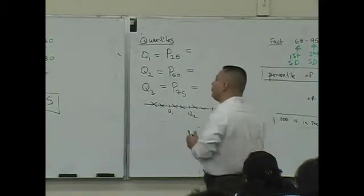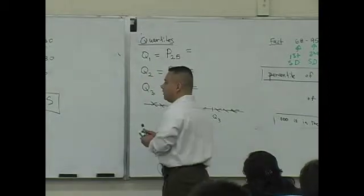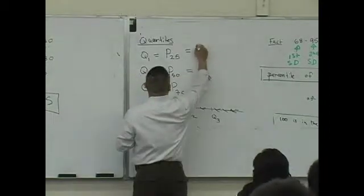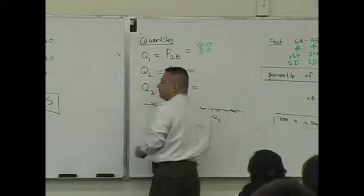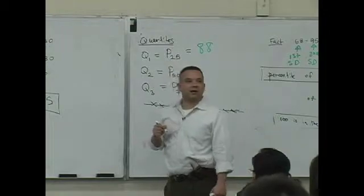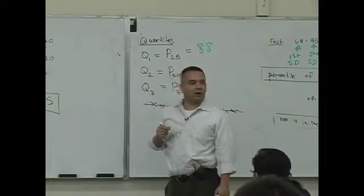So what was the first quartile here? What was it? 88. What was the 50th percentile? What is it? That was our example. What was that value? 118.